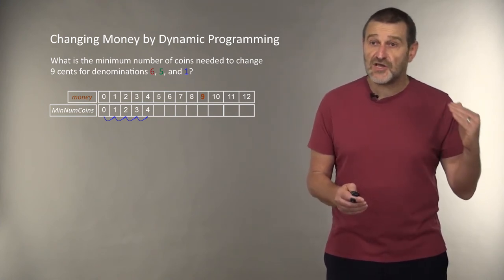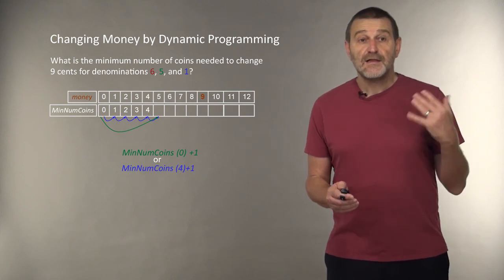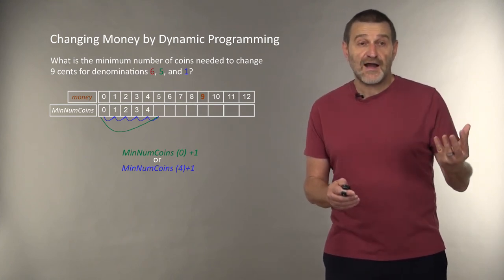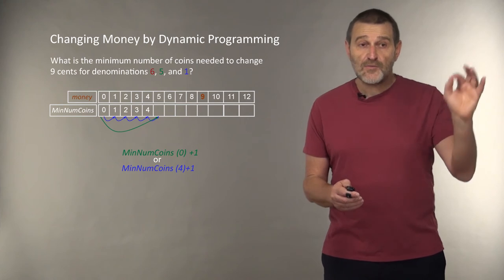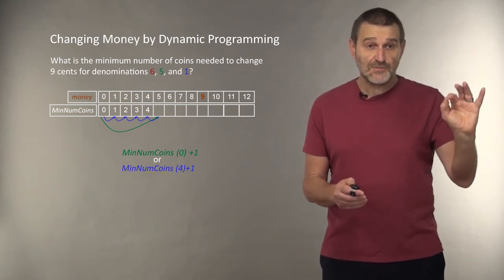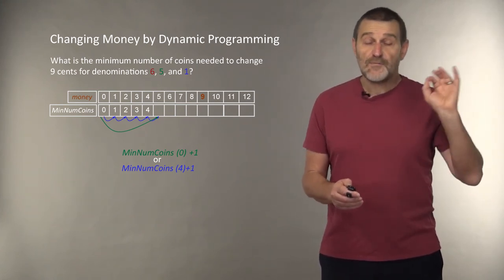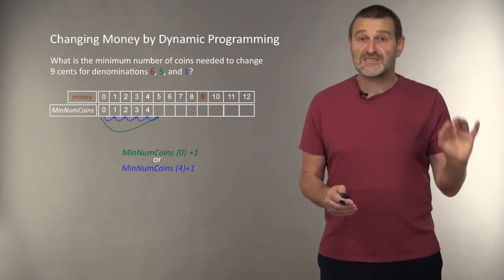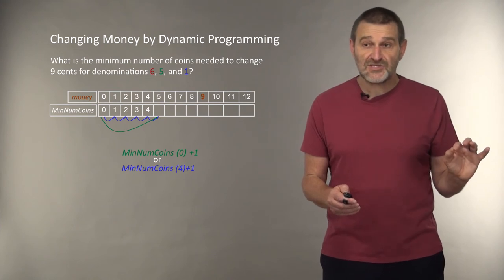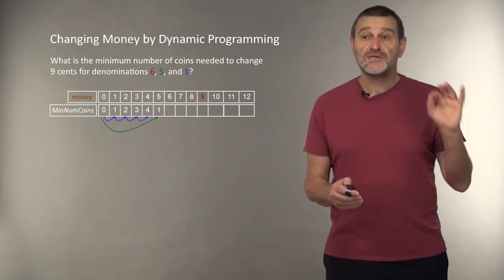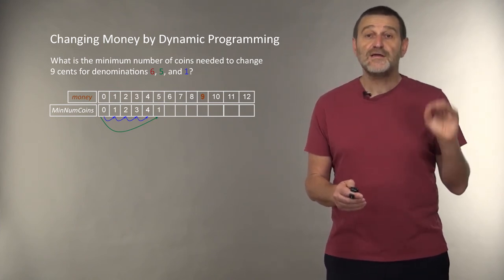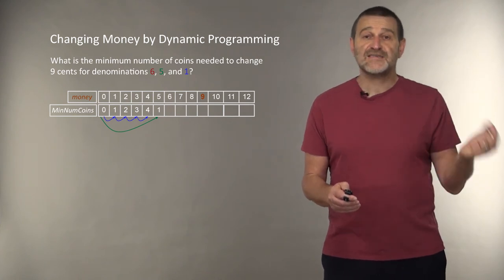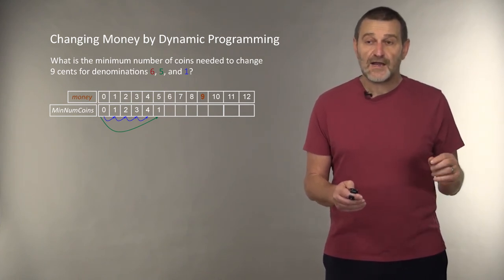And they can be changed in two different ways. They can be changed either by taking the minimum number of coins to change 0 and adding 1 coin, or the minimum number of coins to change 4 and adding 1 coin. Which of these numbers is smaller? This is a simple check. And we choose to change 5 coins by adding a 5 cents coin to the existing combination.